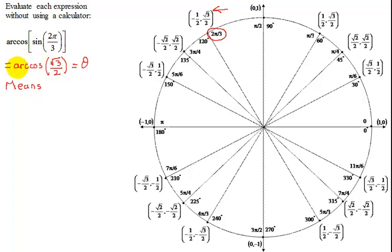This means if I have the arc cosine of the square root of 3 over 2 equals theta, this means the cosine of theta equals the square root of 3 over 2. And remember on every inverse trig function, there are restrictions.